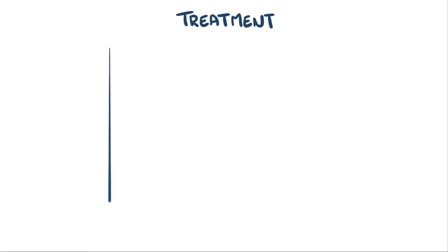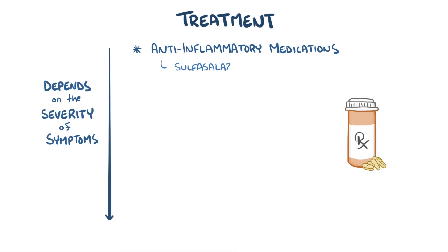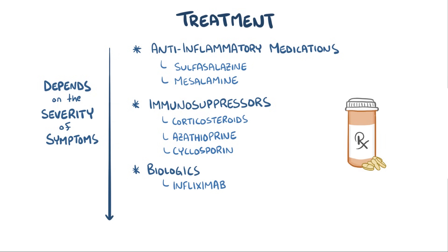Treatment for ulcerative colitis depends on the severity of the symptoms. Often anti-inflammatory medications like sulfasalazine or mesalamine are given. In more severe cases, drugs that suppress the immune system like corticosteroids, azathioprine, or cyclosporine might be prescribed. If those fail, biological treatments like infliximab — which is a TNF inhibitor — adalimumab, and golimumab can be used.